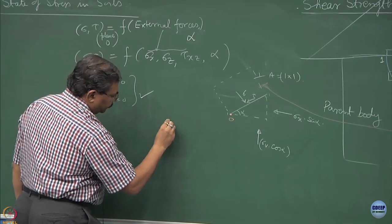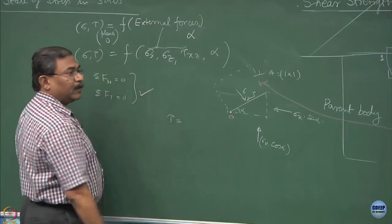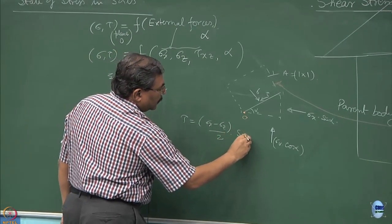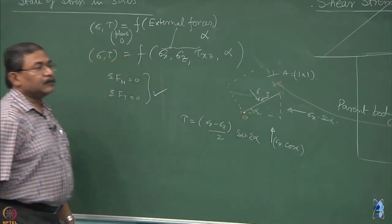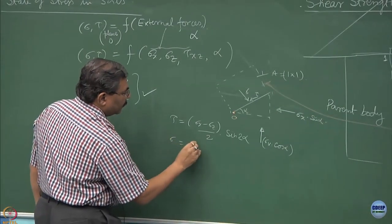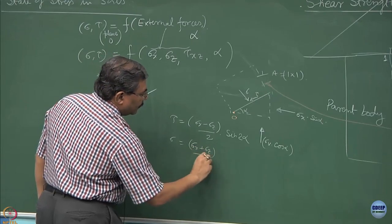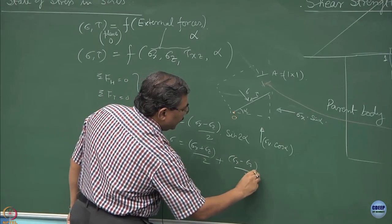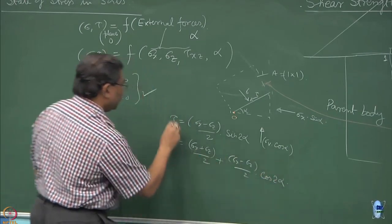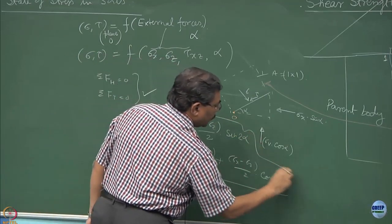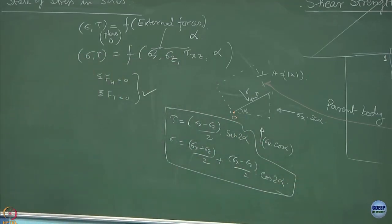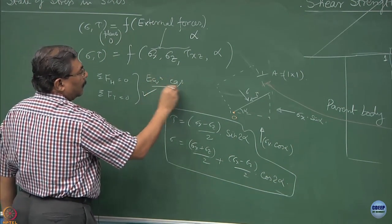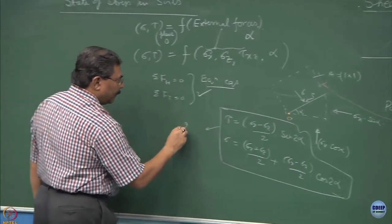And try to prove that tau will be equal to sigma x minus sigma z by 2 into sin 2 alpha and sigma will be equal to sigma x plus sigma z by 2 plus sigma x minus sigma z by 2 into cos of 2 alpha. This is what is known as the equilibrium equations and these are known as 2 alpha equations.